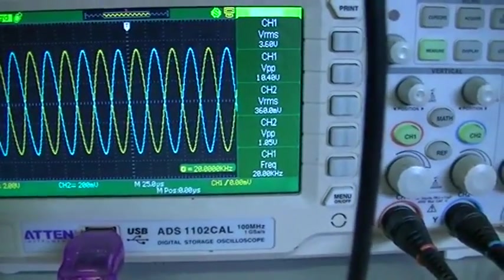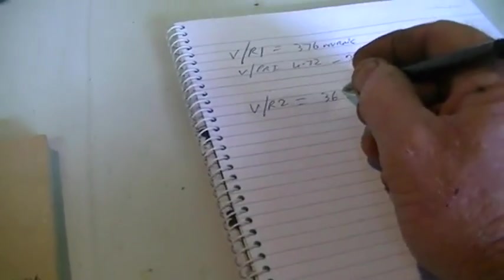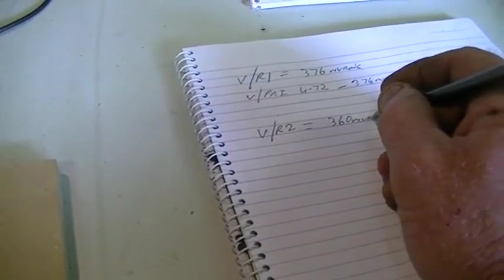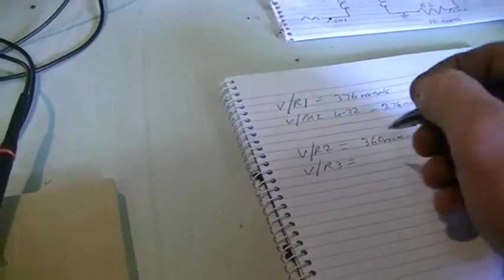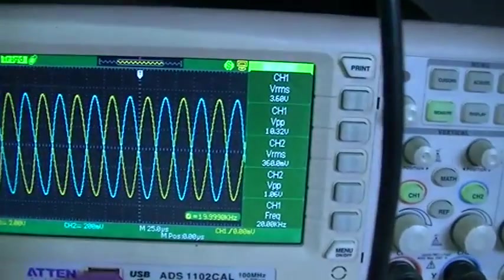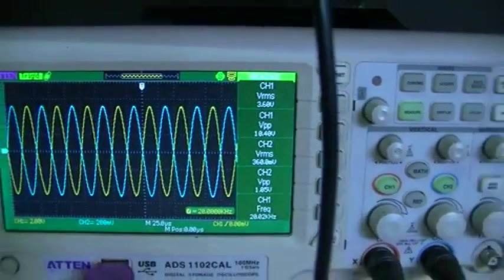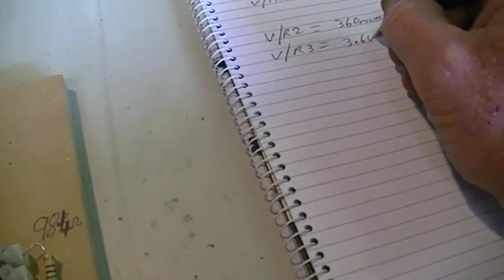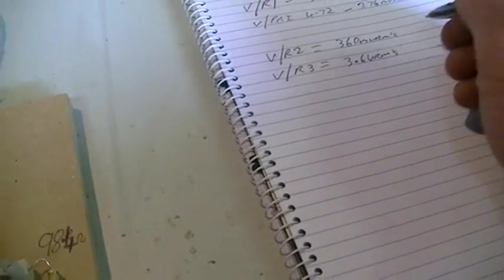So voltage over R2, which is our CVR in the output, is 360 millivolts RMS. And the voltage over R3, which is our load resistor, is 3.6 volts RMS.